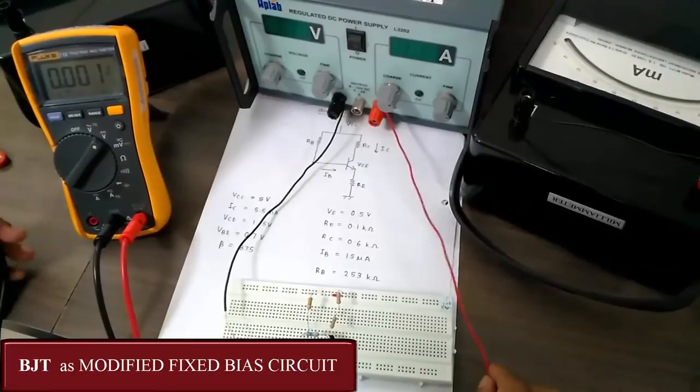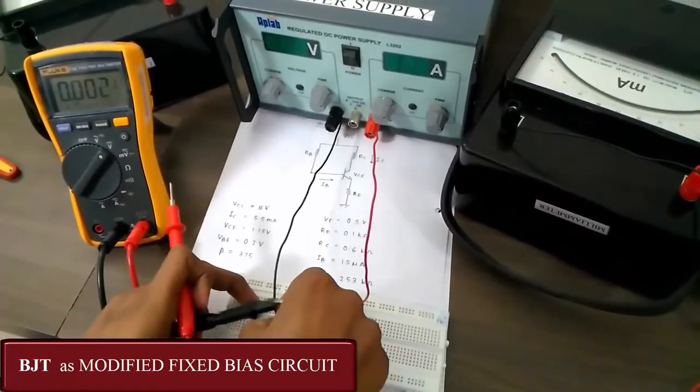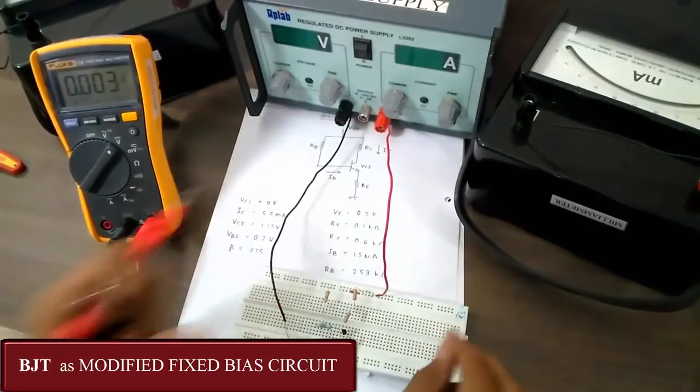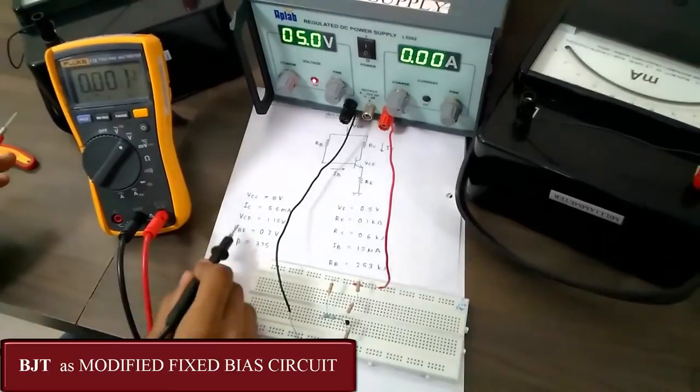Applied to the modified fixed bias circuit. This is positive and this is ground. We have set the power supply at 5 volts. Now, let us check the value of VCE.